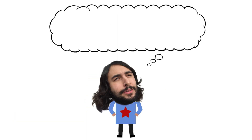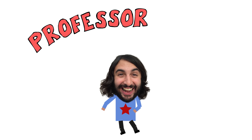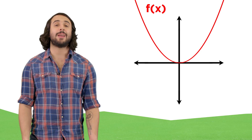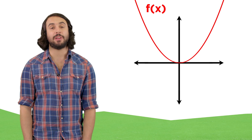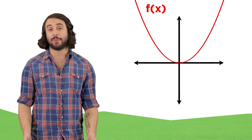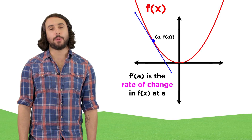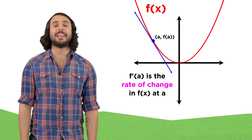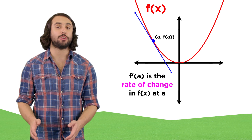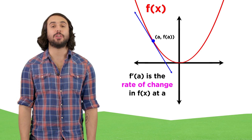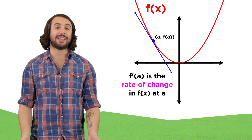Professor Dave here, let's get back to graphing. We need to expand our abilities now that we understand differentiation. The derivative of a function at a particular point is equal to the rate of change in the function at that point. This fact should help us graph the derivatives of functions and relate them to the original.